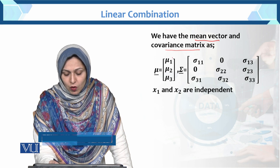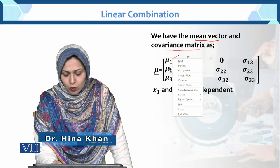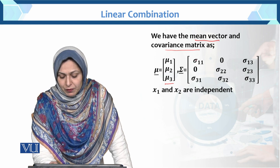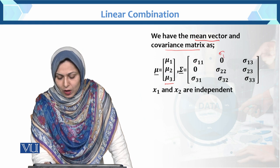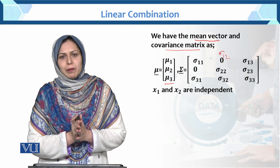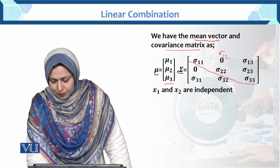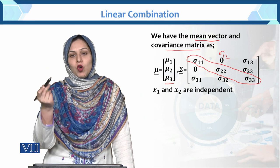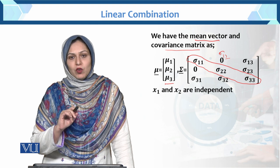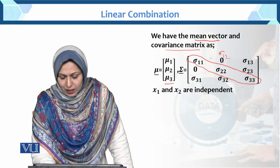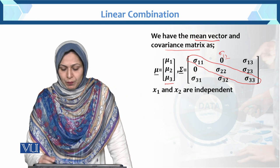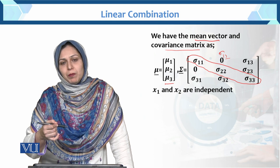Now look at the variance-covariance matrix sigma. The diagonal elements sigma11, sigma22, sigma33 are the variances, and the off-diagonal elements are the covariances. Since x1 and x2 are independent, their covariance is zero — so sigma12 = sigma21 = 0. Under this condition we solve all five parts.